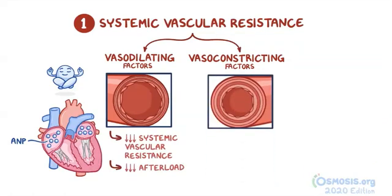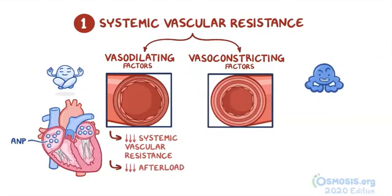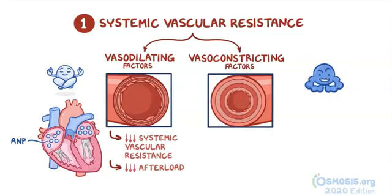On the other hand, vasoconstricting factors such as sympathetic stimulation constrict smooth muscle cells within the vessel walls, thereby narrowing the vessel lumen. This leads to an increase in systemic vascular resistance and therefore increased afterload.